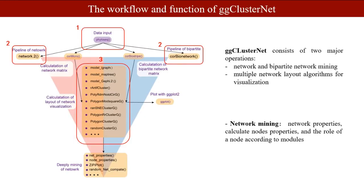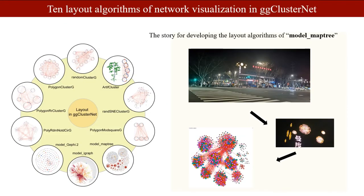GGClusterNet consists of two major options: network and bipartite network mining, multiple network layout algorithms for visualization. As for network mining, network properties calculate node properties and the role of the node according to the modules. The 10 visual layout algorithms in GGClusterNet could make network coordinates according to the modularity properties in the network. For example, the microbe network at the bottom right used the model mapping layout algorithm to calculate the network layout.